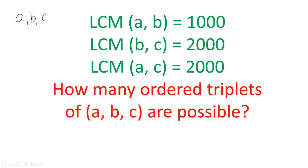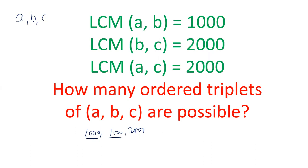We have to find out how many such triplets are possible — that is, how many values of A, B, C are possible satisfying those LCM conditions. One example is A=1000, B=2000, C=2000. Of course the LCM of all three will be 2000. There may be some other numbers also, and we have to find out how many such triplets are possible.